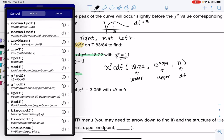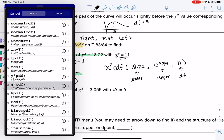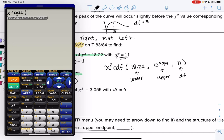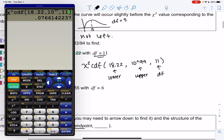Every calculator has slightly different functions, so it should be around there. Make sure you do CDF, not PDF. And then we'll do lower is 18.22, upper 10^99, and degrees of freedom is 11. And that'll tell us area. So nothing too new, just a new function on the calculator, but concepts are the same, and that's area to the right.